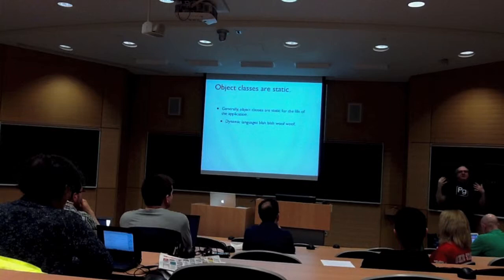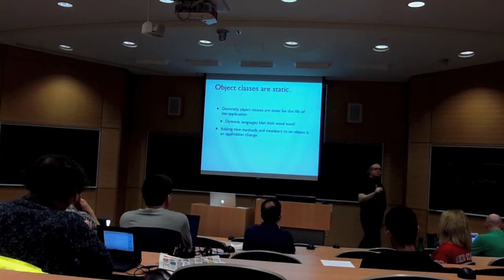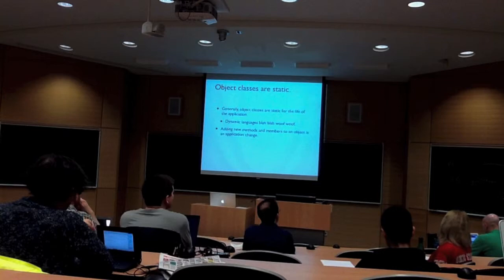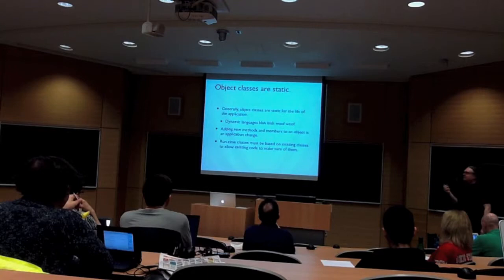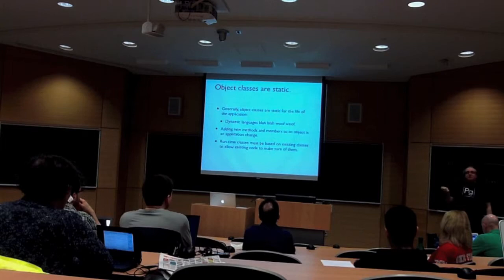And that means, in these cases, it's an application change to add new methods and members to these objects. Again, dynamic languages will let you do this to an extent, but creating a new fundamental base class is basically something you do when you change your application. And, generally, you have to be, even when you're creating these new classes, these subclasses, like the Django ORM creates a new class for every model class that you use, but it's only in reference to an existing base class. Okay, how are we doing so far? Glazed over. Questions? Comments?